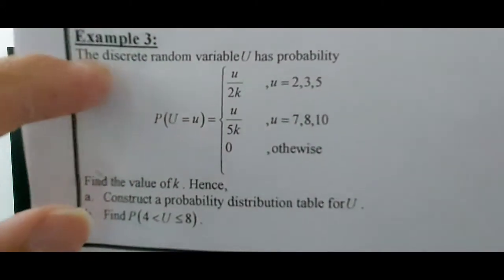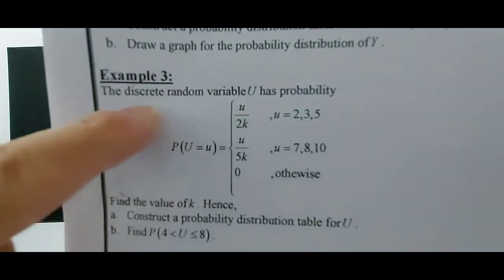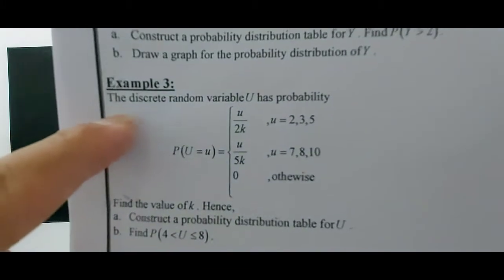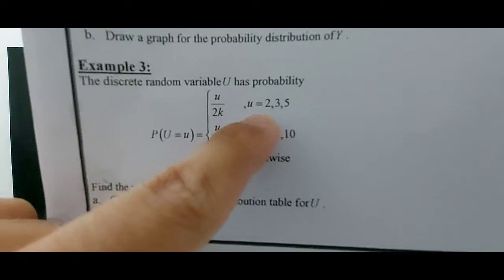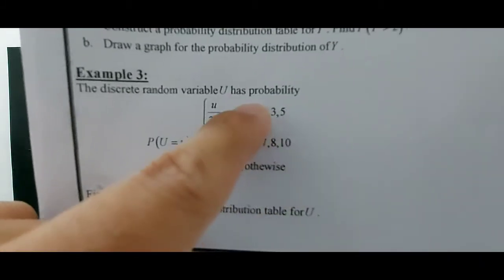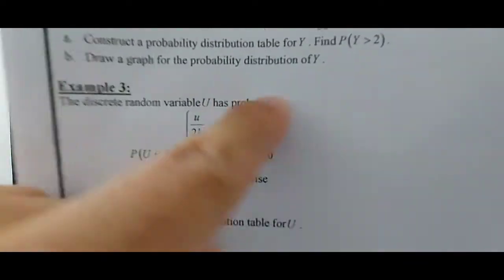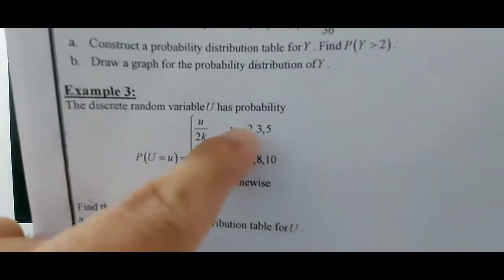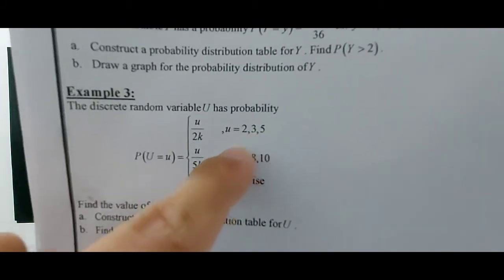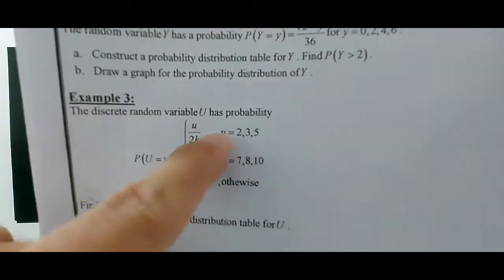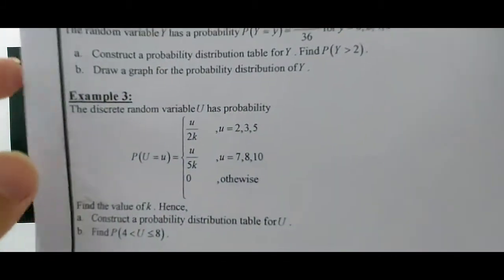The question clearly states that u is a discrete random variable. When they tell you that u is a discrete random variable, you have to identify the values: 2, 3, 5, 7, 8, and 10 — that's 6 values. The total probability of all 6 must add up to 1. That is the characteristic of a discrete random variable.